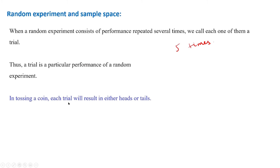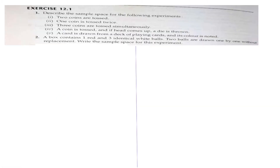Now we will see the exercise questions. Exercise 12.1, question one: describe the sample space for the following experiments. The first subdivision: two coins are tossed. Let me draw a diagram to explain this.